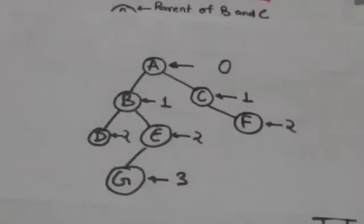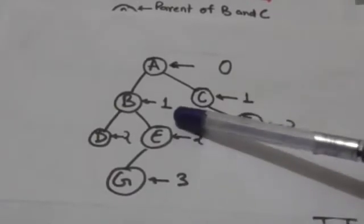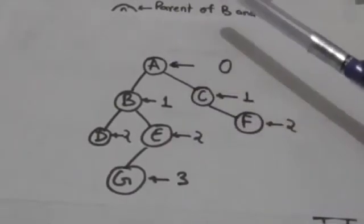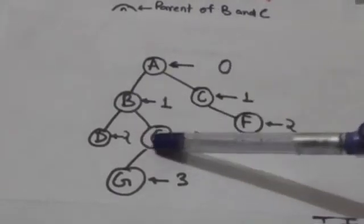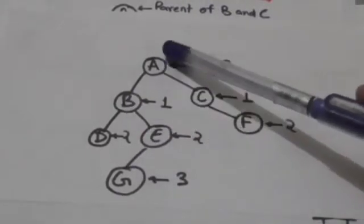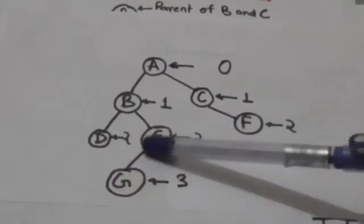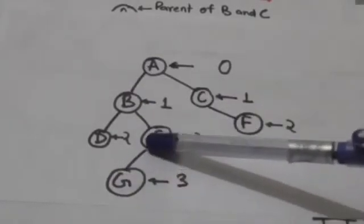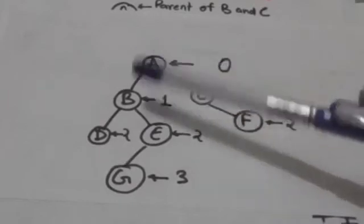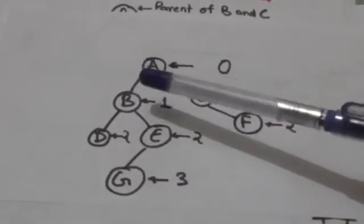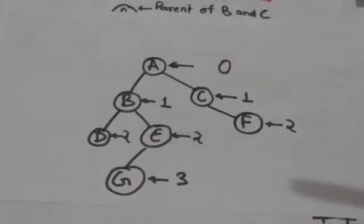In this binary tree, maximum number of nodes are in this branch. It has 4 nodes. So height or depth of this binary tree T is 4.